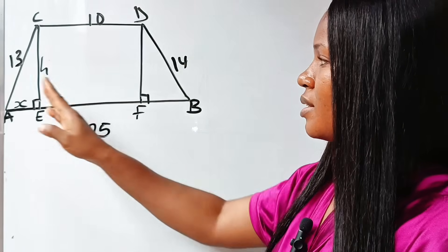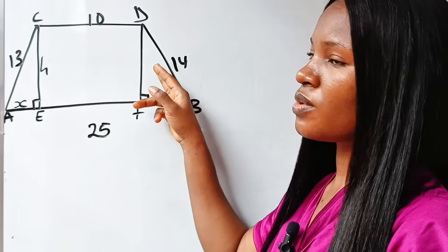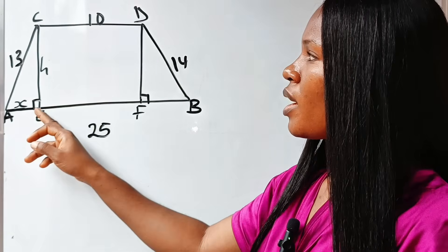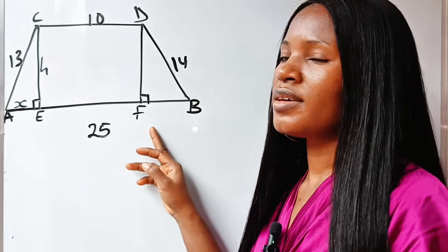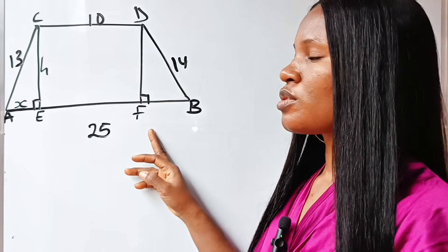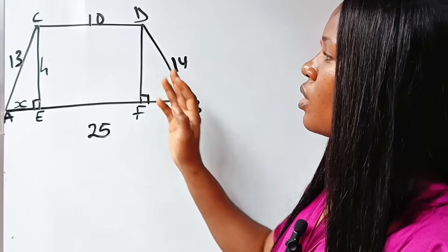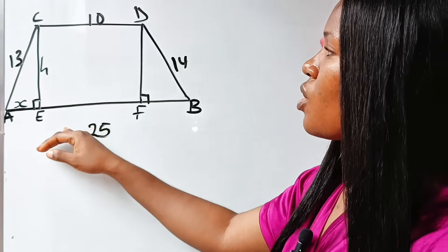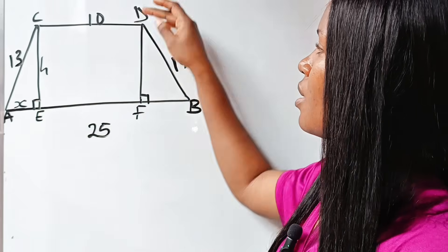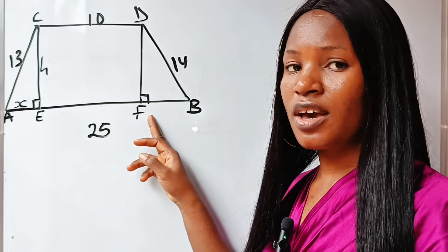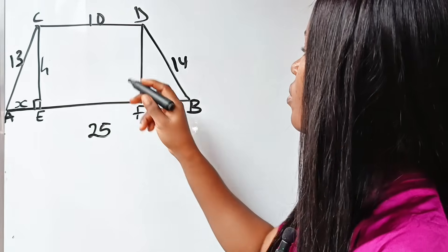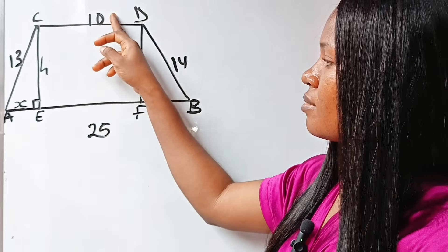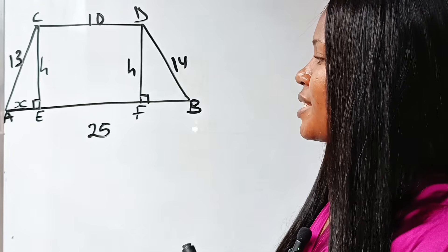Remember that CD is parallel to EF, and EF is parallel to AB, so CDEF is a rectangle. Because it's a rectangle, opposite sides are equal. So if CE is H, then DF is H as well. And if CD is 10, then EF is 10 as well.